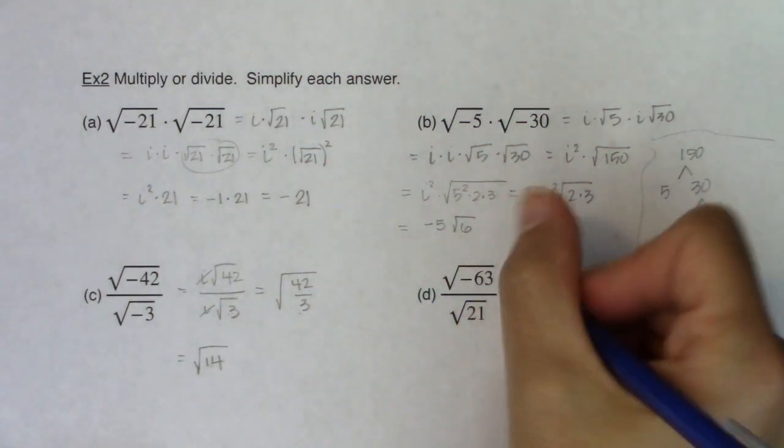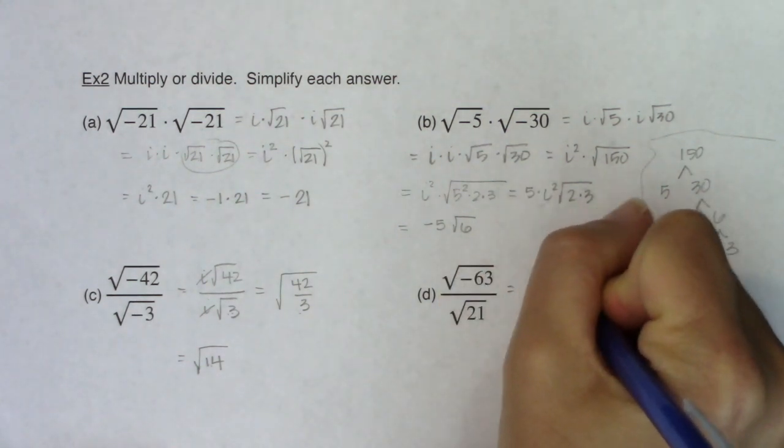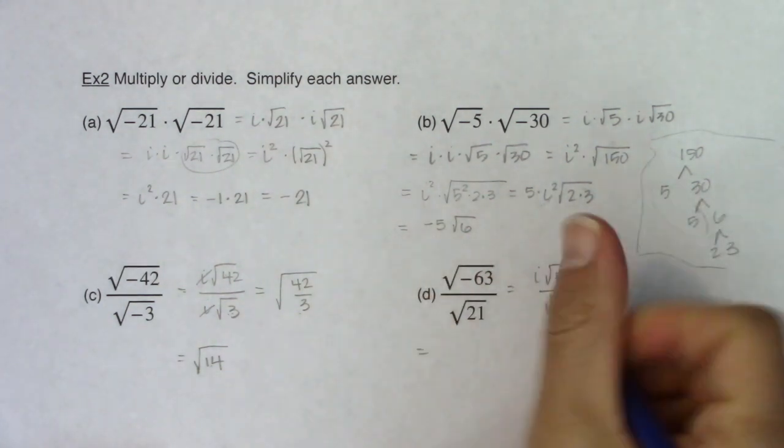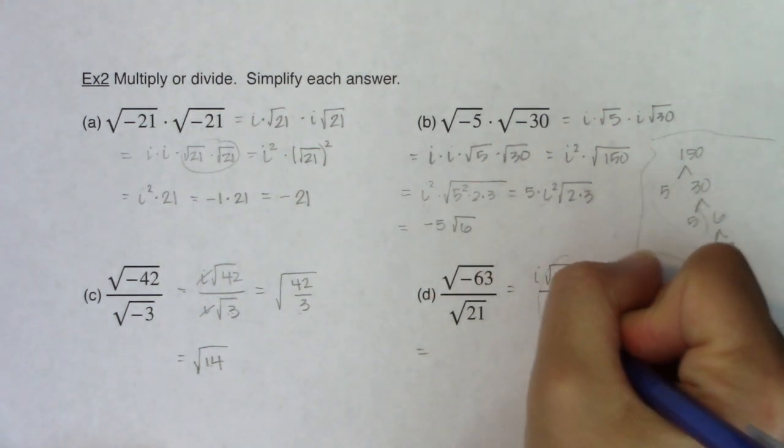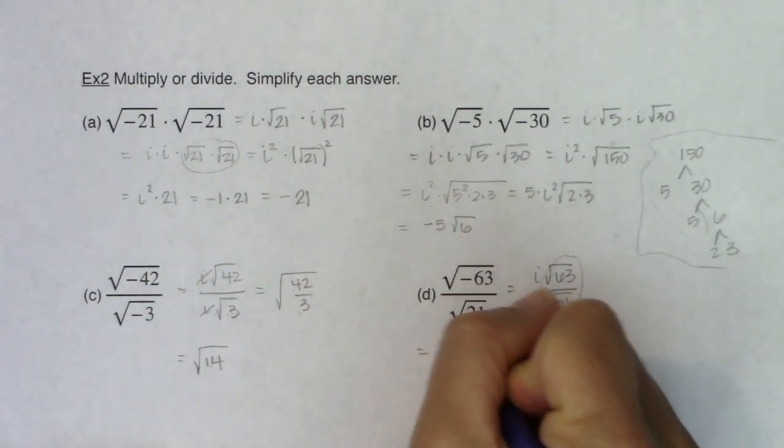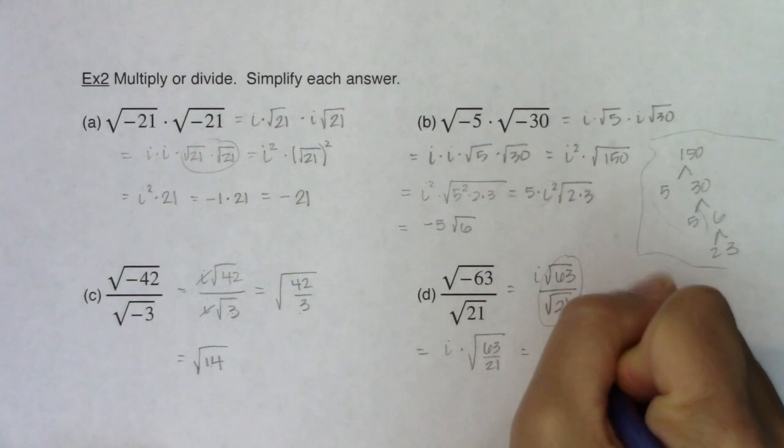Alright, for part D, again, I only see the one i up here, which is no biggie. So we've got i times the square root of 63 over 21. And through properties of radicals, I can take this expression and put it under one radical. So I have i times the square root of 63 over 21. And 63 over 21 is the number 3.